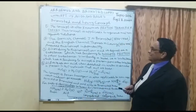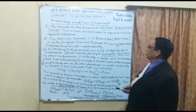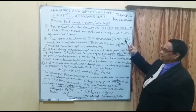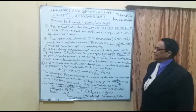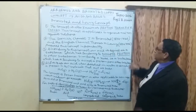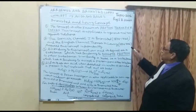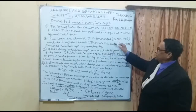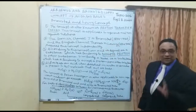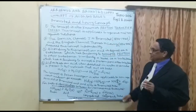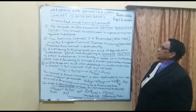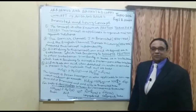Number two: the Danish chemist J.N. Bronsted worked from 1874 to 1936, and the English chemist Thomas M. Lowry also worked from 1874 to 1936. They worked independently — one was Danish and the other English — but proposed the same concept independently. That is why it is combined and known as the Bronsted-Lowry concept of acid and base.